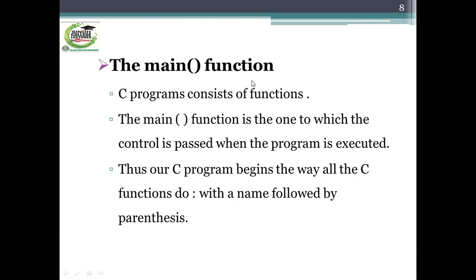The main function: all C programs are divided into units. These units are called functions that perform some specific task. C programs consist of functions. The main function is the one to which the control is passed and the program is executed. Every C program begins the way all C functions do — with a name followed by parentheses.